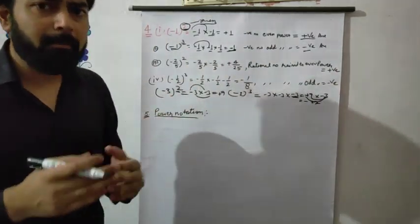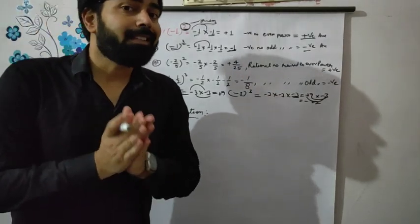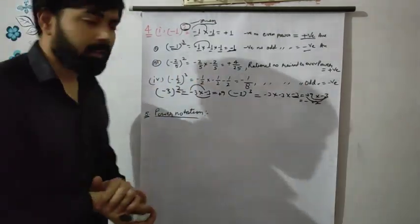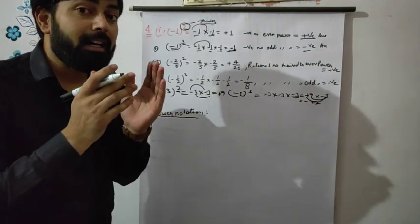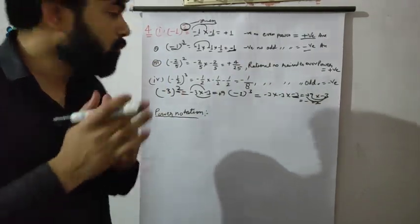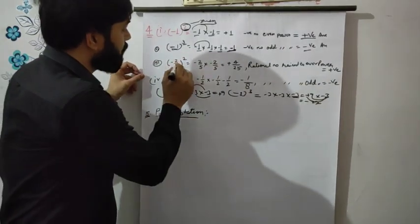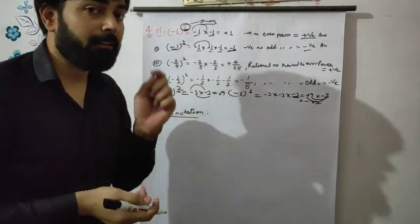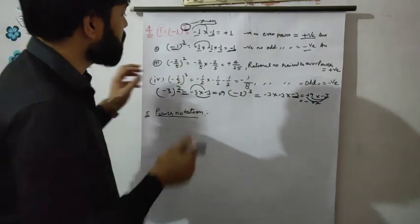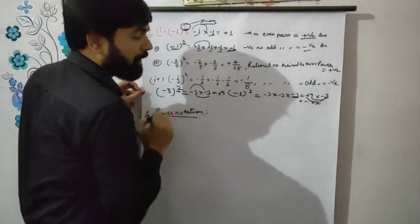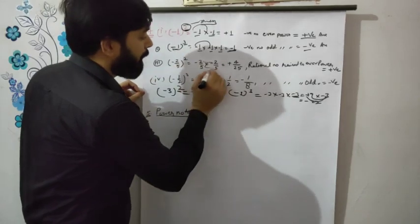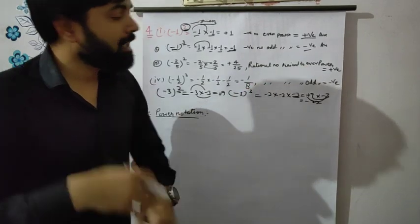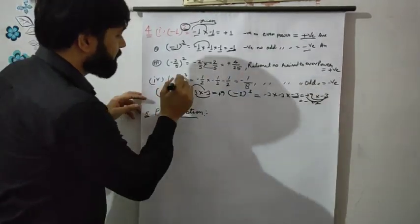Now next: if we have a rational number — you know rational numbers from class 7 and class 8 chapter 1 — a rational number is one we can write in the form P/Q. For example, minus 2 upon 5 to the power 2 (even): minus 2/5 × minus 2/5. Minus × minus = plus, 2×2=4, 5×5=25, so the answer is 4/25 — positive. So when a rational number is raised to an even power, the answer is positive.